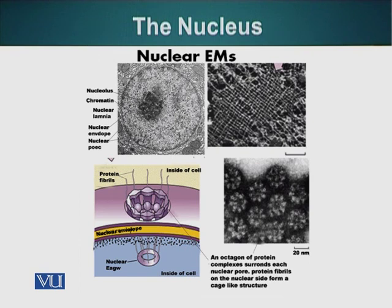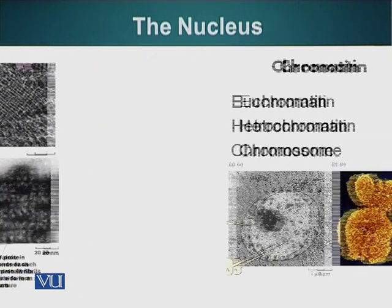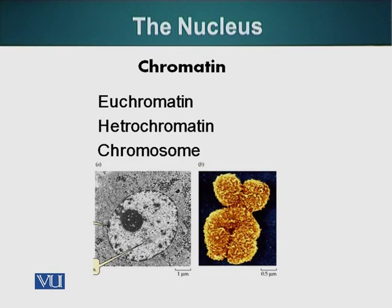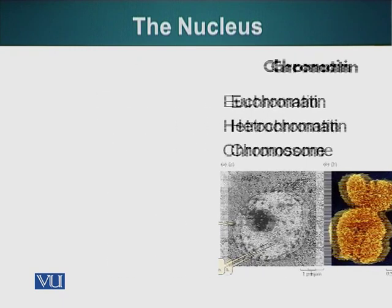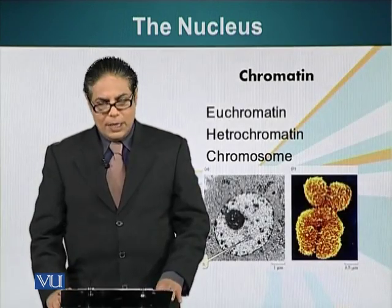Now we will look at the major content of the nucleus: the nucleic acid. DNA is arranged in chromosomes inside a eukaryotic nucleus. During cell division, the chromatin — this DNA — is condensed and forms discrete structures called chromosomes. We will talk about chromosomes in a later lecture. These chromosomes are made up of DNA and a special type of protein called histones. The DNA is wrapped tightly around the histone molecules, which we will discuss in a subsequent module.